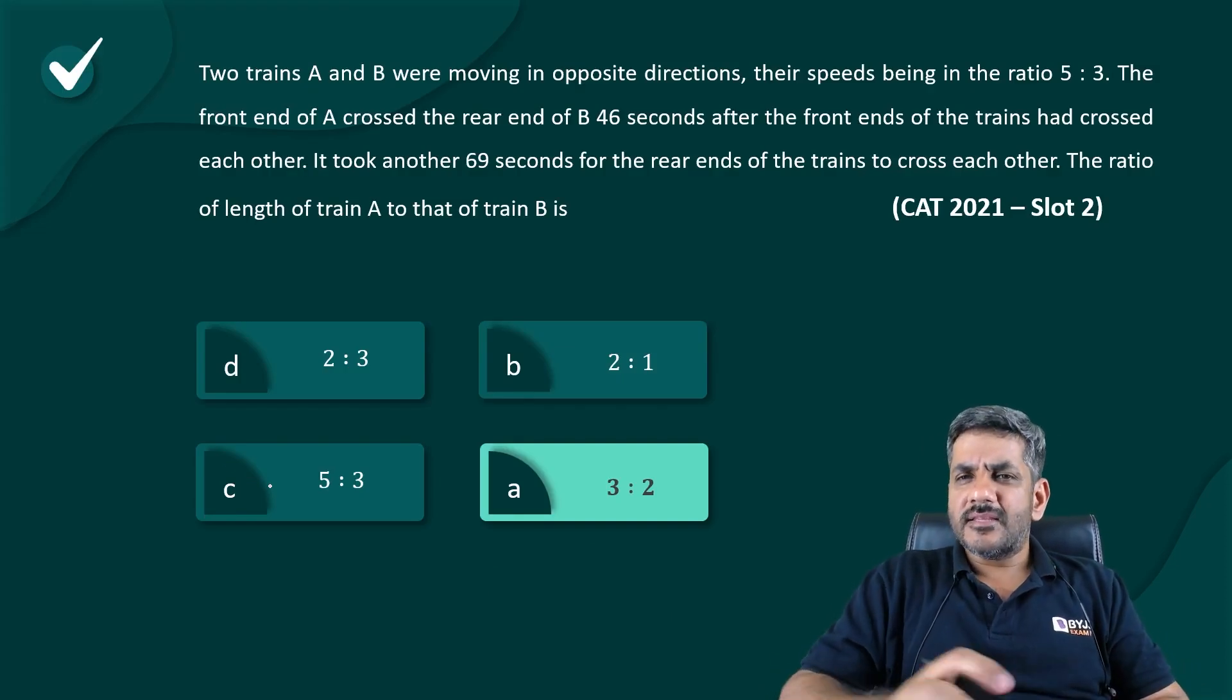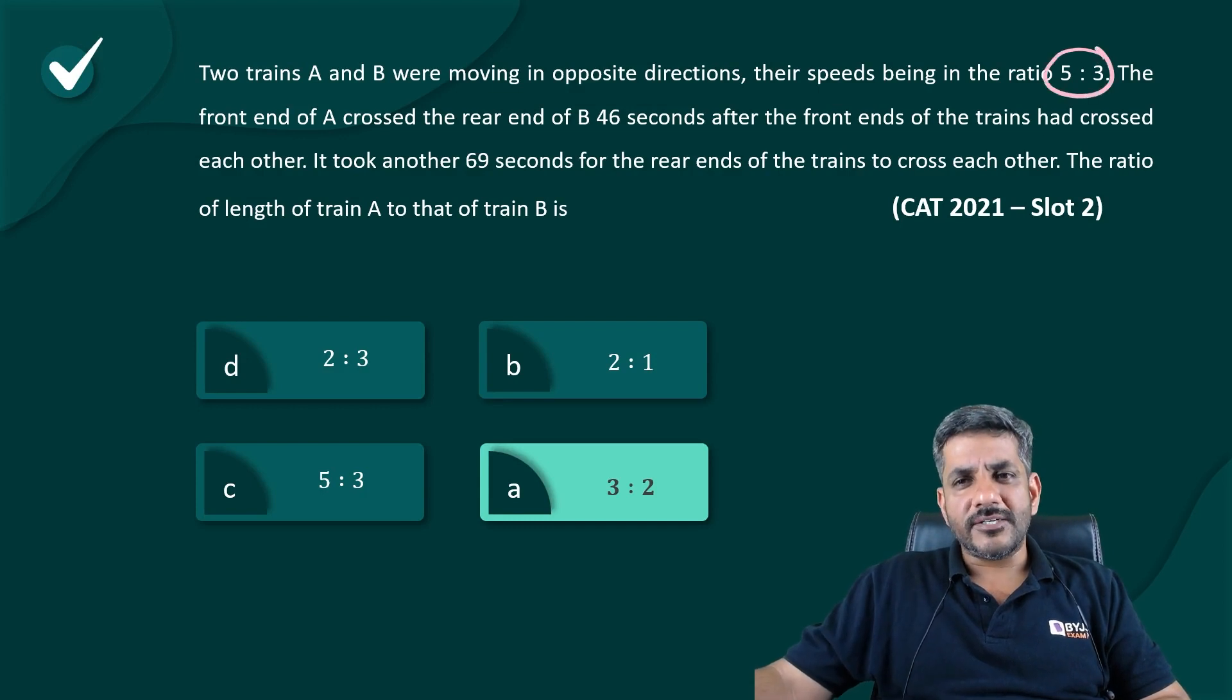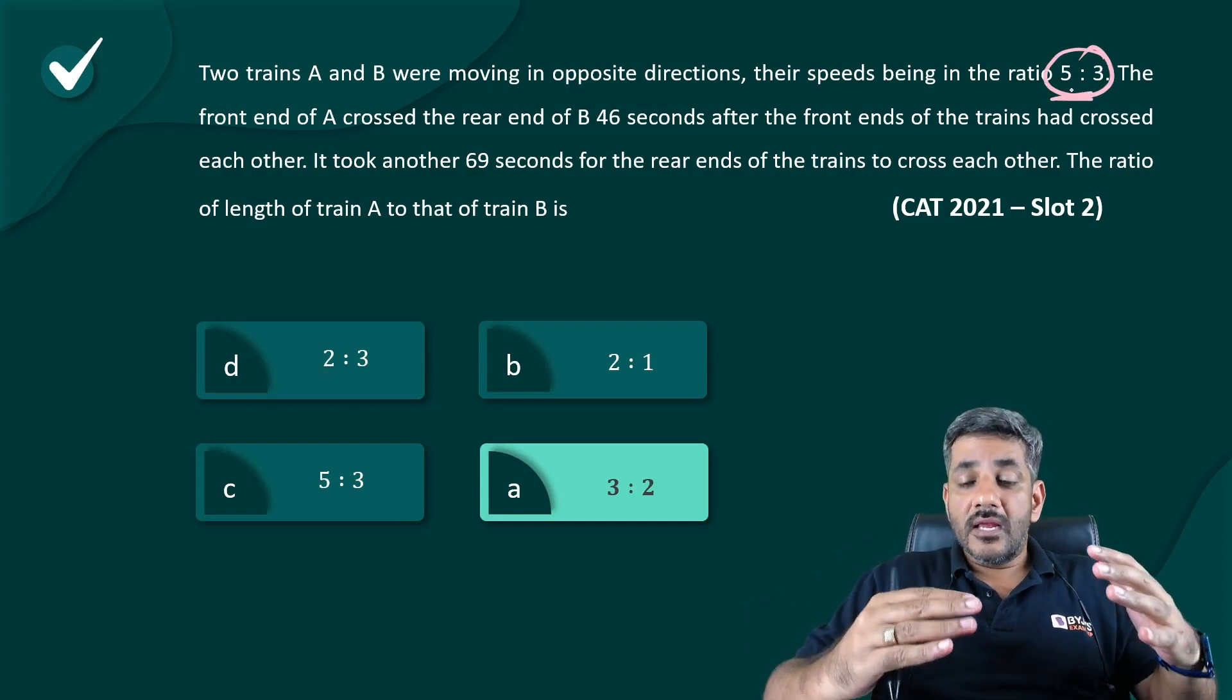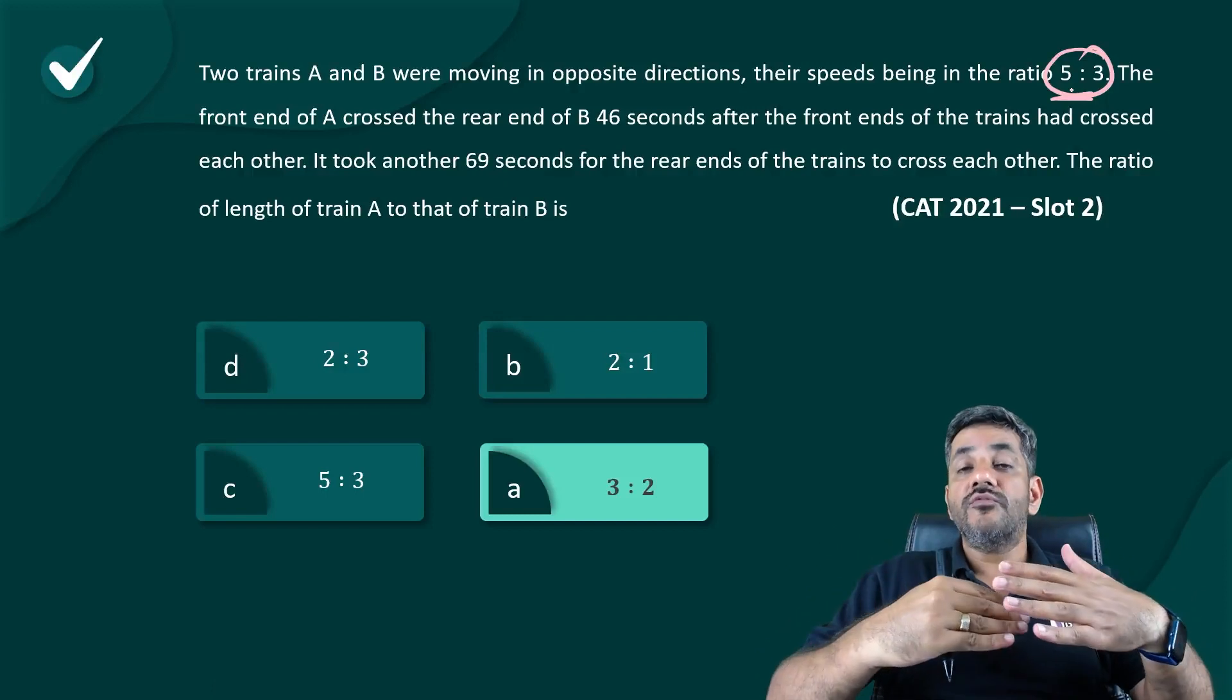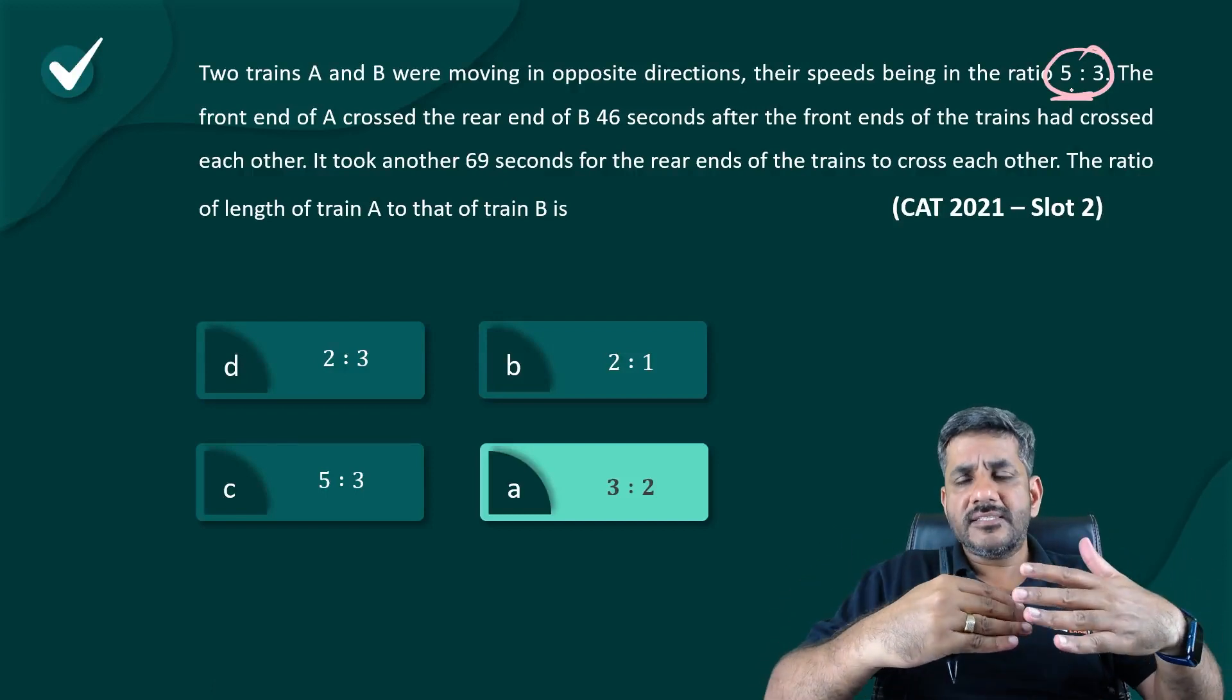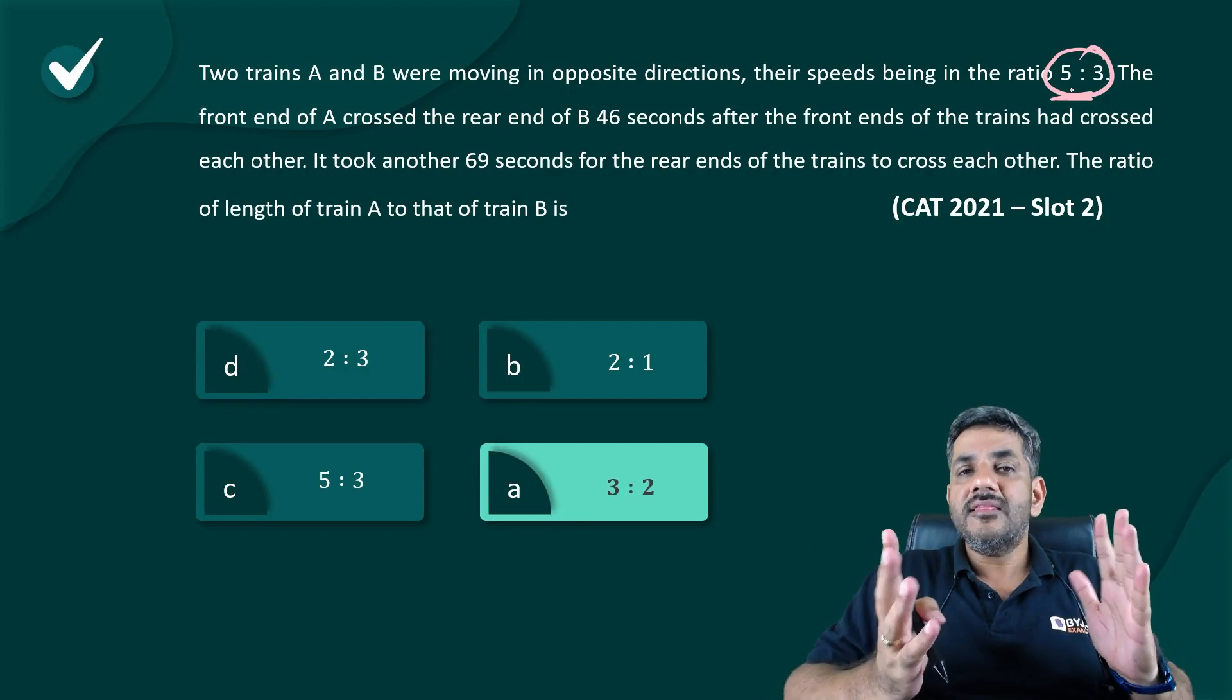Now in this question, some of you might be thinking you did not use 5 is to 3 at all. This just tells you at what speed these two trains are moving towards each other. But whatever the situation is, that relative speed would always remain the same.